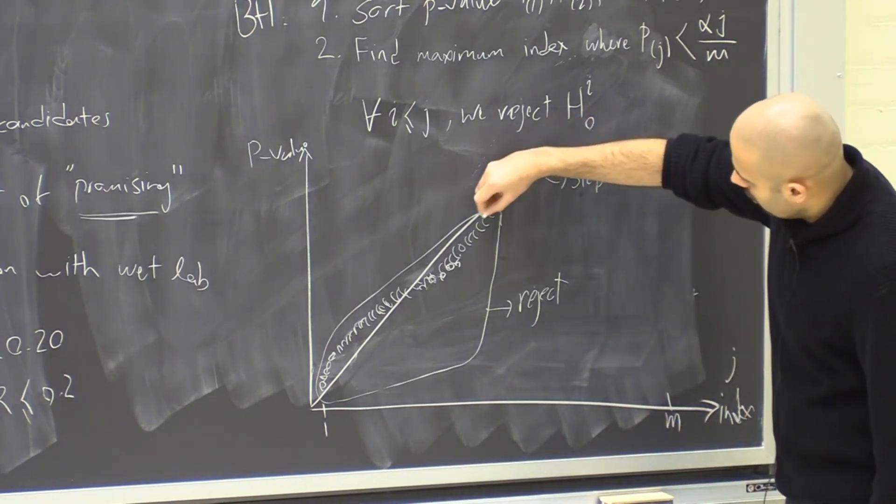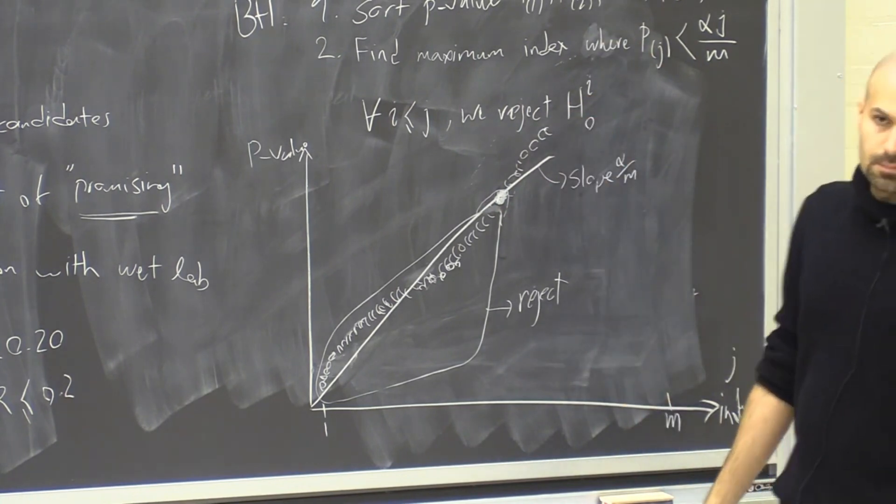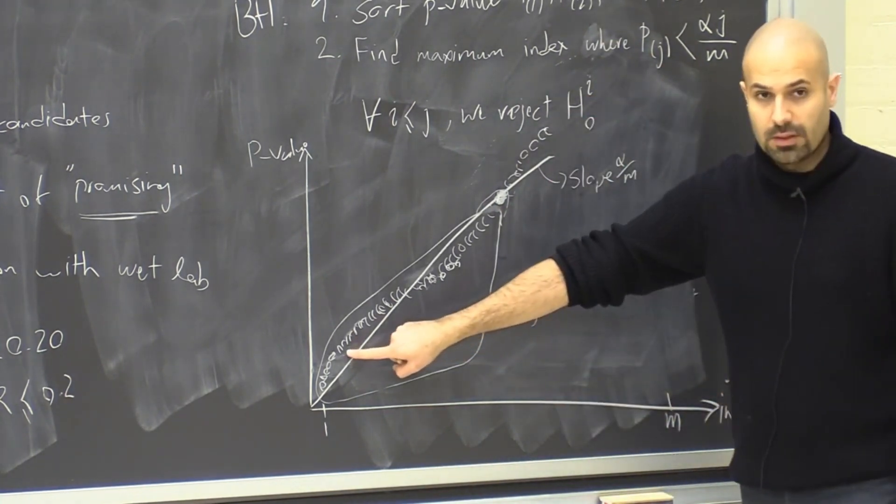So now with the Benjamini-Hochberg procedure, what we do is we have this line. So this is essentially j. And we have some line with a slope of alpha over M. Because the x-axis here is j. And then based on how this line intersects with that trend of these data points of p-values, we're going to see the maximum index where the p-value is below the line.